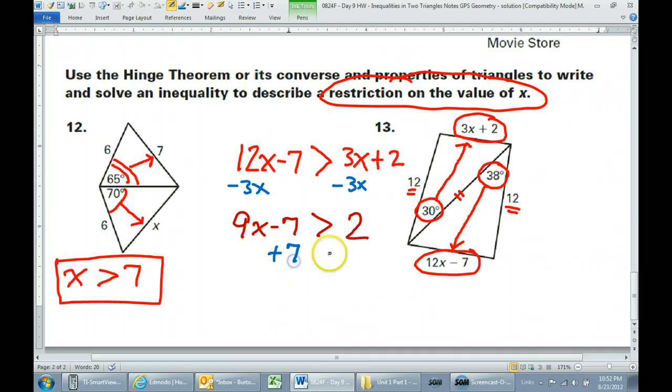I'm going to add 7 to both sides. So that's going to give me 9x is greater than 9. Now what am I going to do to get x by itself?